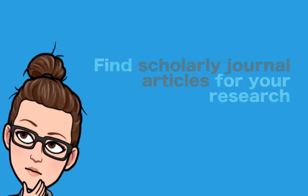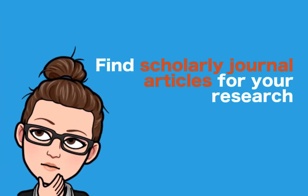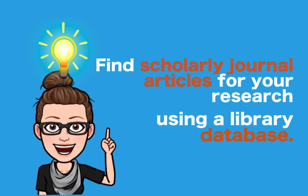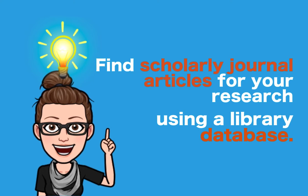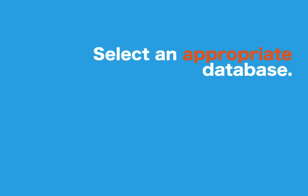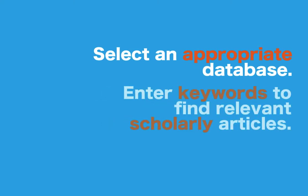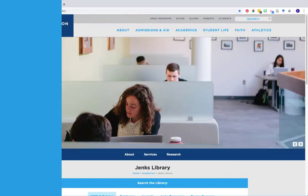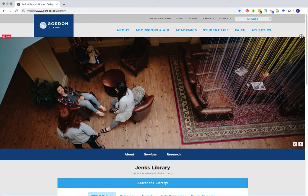So you need to find scholarly journal articles for your research. Library databases are a great tool to search for reliable information to use on your topic. At Jenks we have over 100 different databases you can choose to search. This video will teach you how to select the appropriate database to search and how to enter your keywords in order to find relevant articles on your topic.